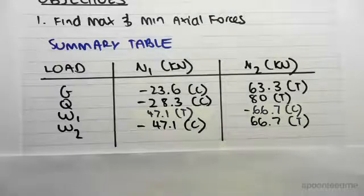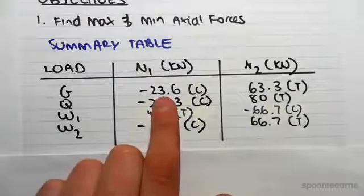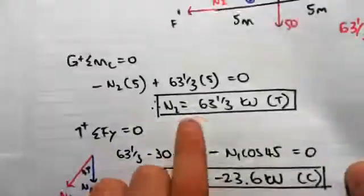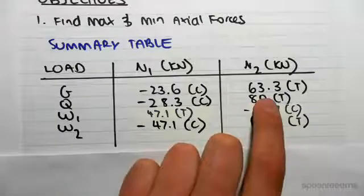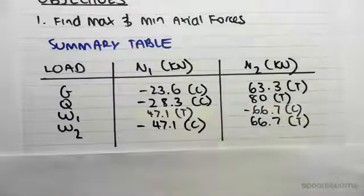We found n1 minus 23.6 in compression. N2, 63 and a third, so I've just rounded it to 63.3, it's in tension. Then for the live load.